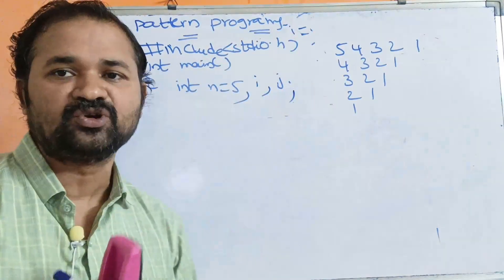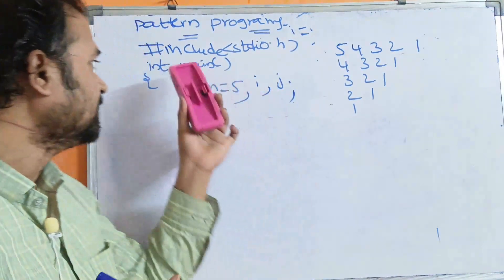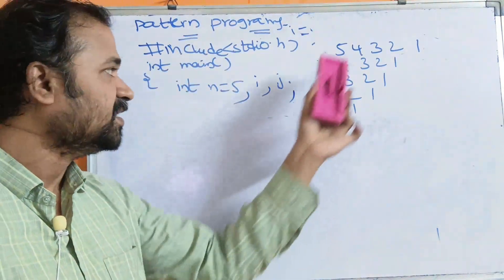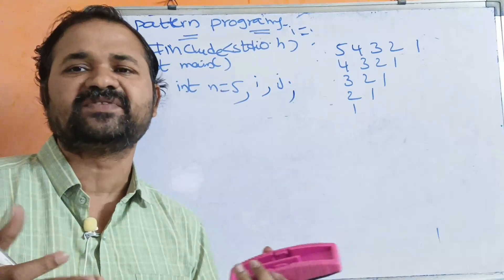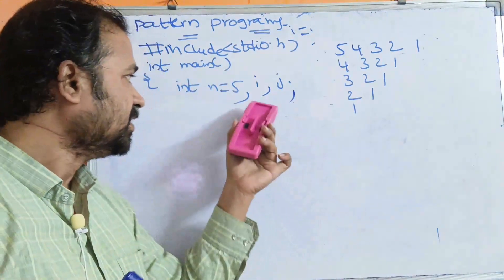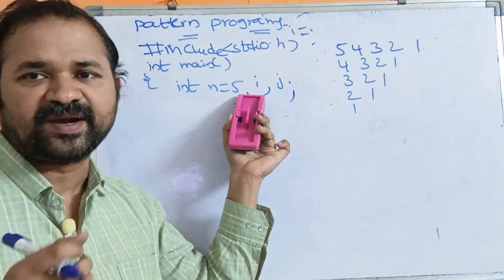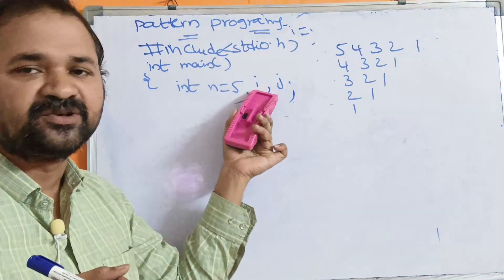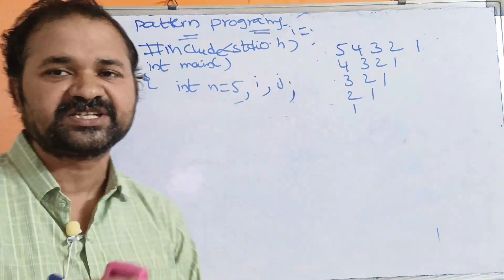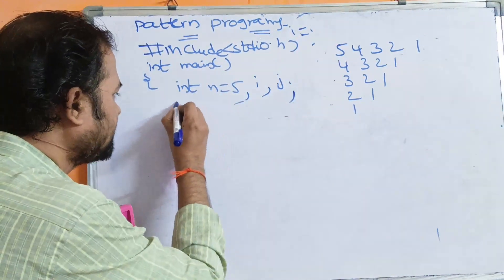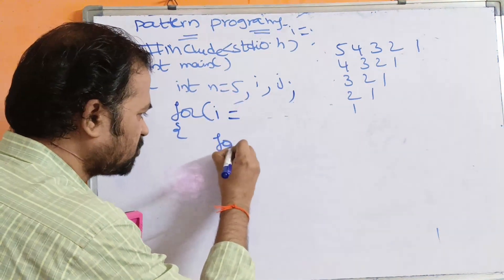First we include stdio.h, because the printf and scanf functions are in stdio.h. Then we define the main function. If 5 rows are to display, n is equal to 5 — it is your choice. We will have two for loops: the first for loop is the outermost loop for i, and the second for loop is the innermost loop for j.